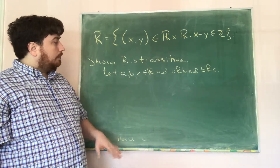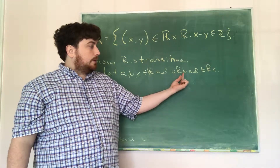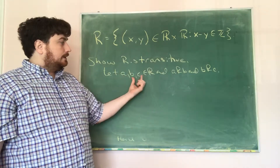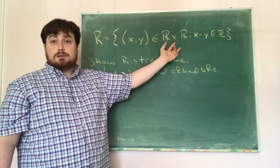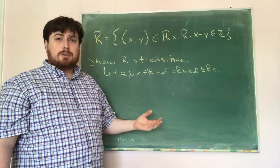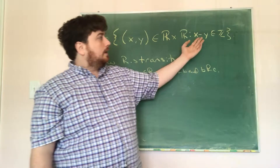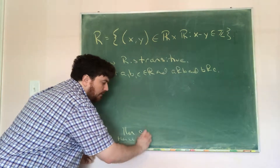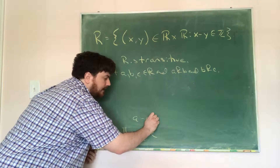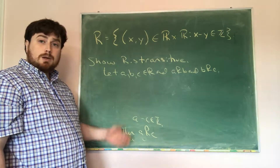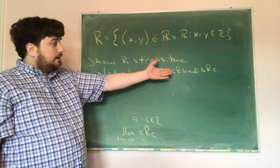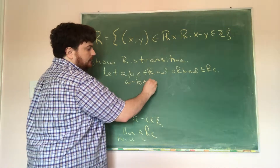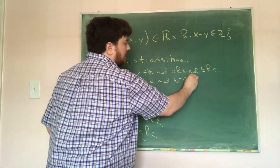If a is related to b, then (a, b) is in r cross r, and (b, c) is in r cross r. Since a, b, c are real numbers, (a, c) would also be in the reals cross the reals. The other thing we have to show is that a minus c is an integer. We have to derive that from knowing a minus b is an integer and b minus c is an integer.